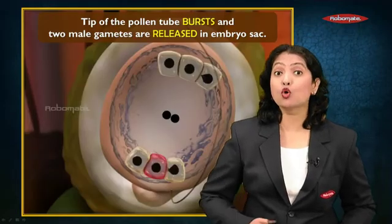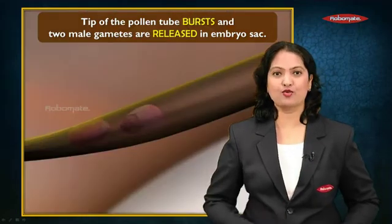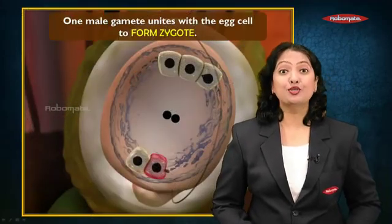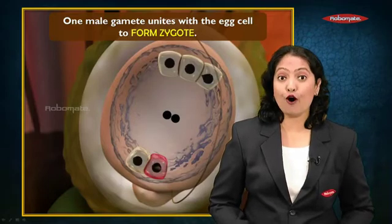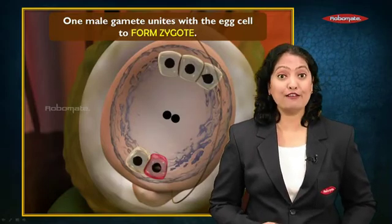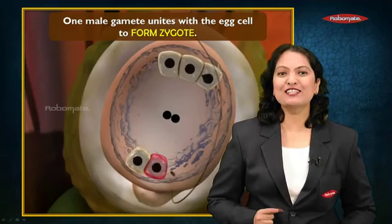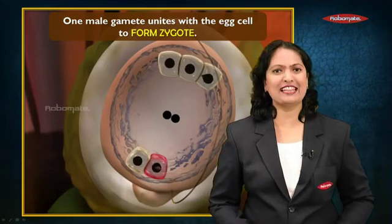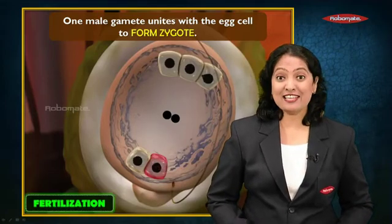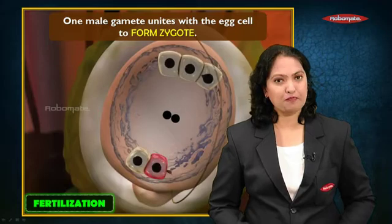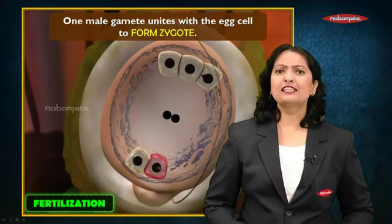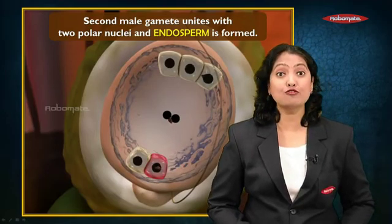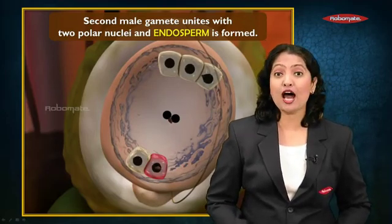Since there are two male gametes, they will fuse with two different cells. First and foremost, one male gamete unites with the egg cell to form the first cell of life called the zygote. This unicellular zygote is formed by the union of the first male gamete and the egg cell — this is the first primary fertilization. After this, the second male gamete enters the embryo sac and goes near the central cell with two polar nuclei.